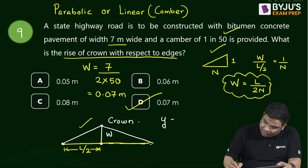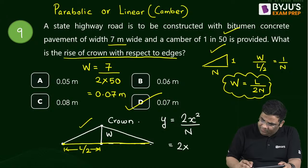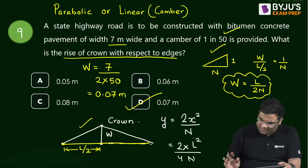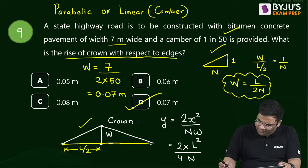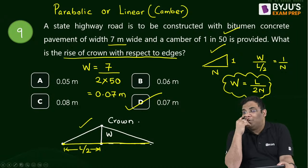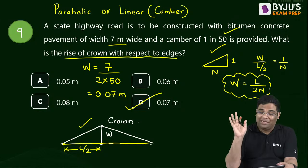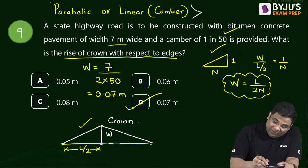Books give a parabolic formula like y = 2x²/(NW) or similar. Even if you use that formula with x = L/2, you get the same answer. So I use W = L/(2N) only — it is applicable for everyone, whether the profile is parabolic or linear.